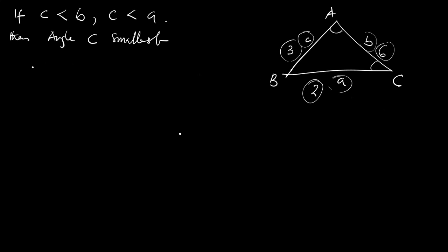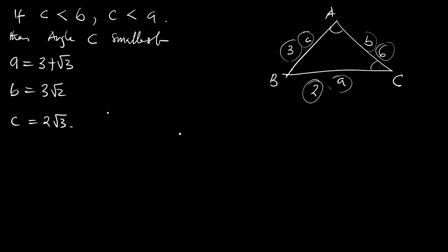So now let's check which side is the smallest. We have A equal to 3 plus root 3, B equal to 3 root 2, and C equal to 2 root 3. Since these are irrational numbers, to know which is bigger, we are going to square them.